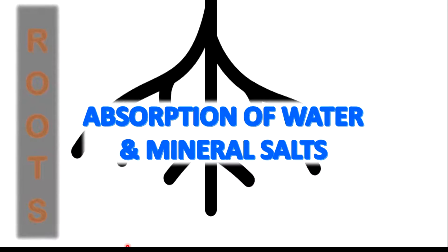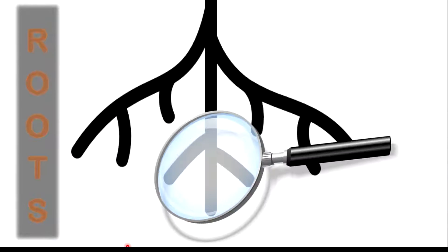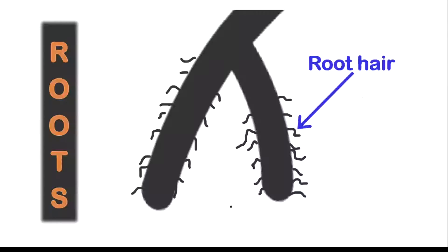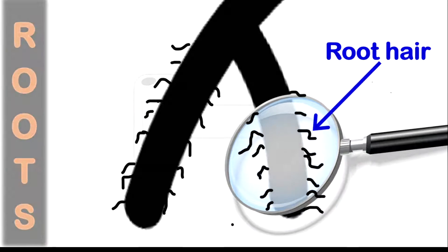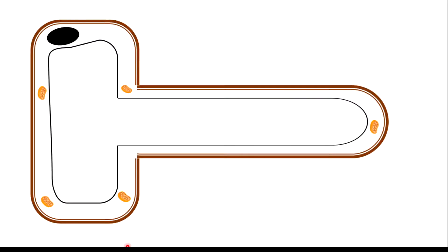If we zoom into a root, what you will find are some smaller structures called root hairs. If we zoom into one of these root hairs, what we will find are some very unique cells called root hair cells.